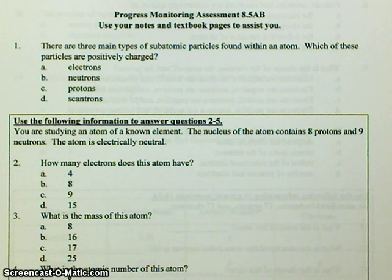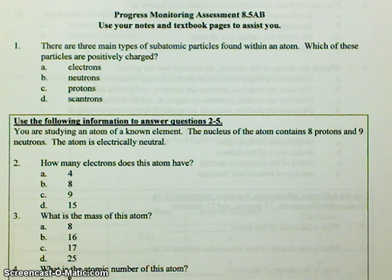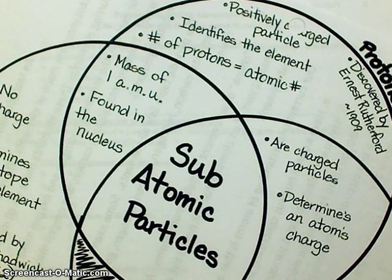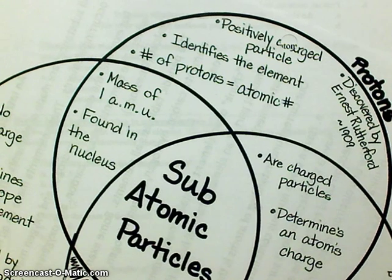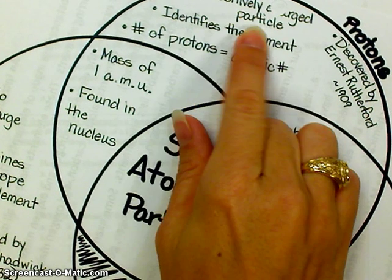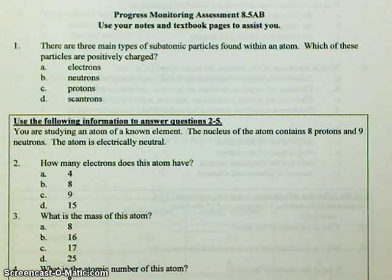Number 1: there are three main types of subatomic particles found within the atom. Which of these particles are positively charged? Remember that our three subatomic particles are protons, neutrons, and electrons. If you remember this Venn diagram that we did, it says that protons are the ones that are positively charged, so you need to select C.